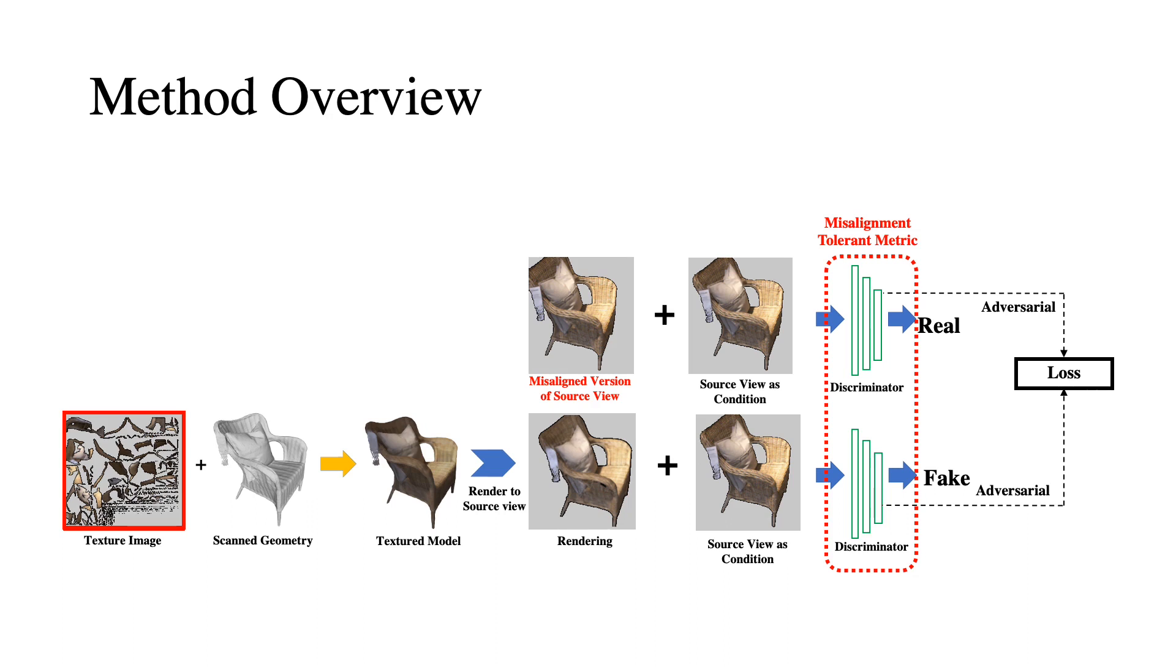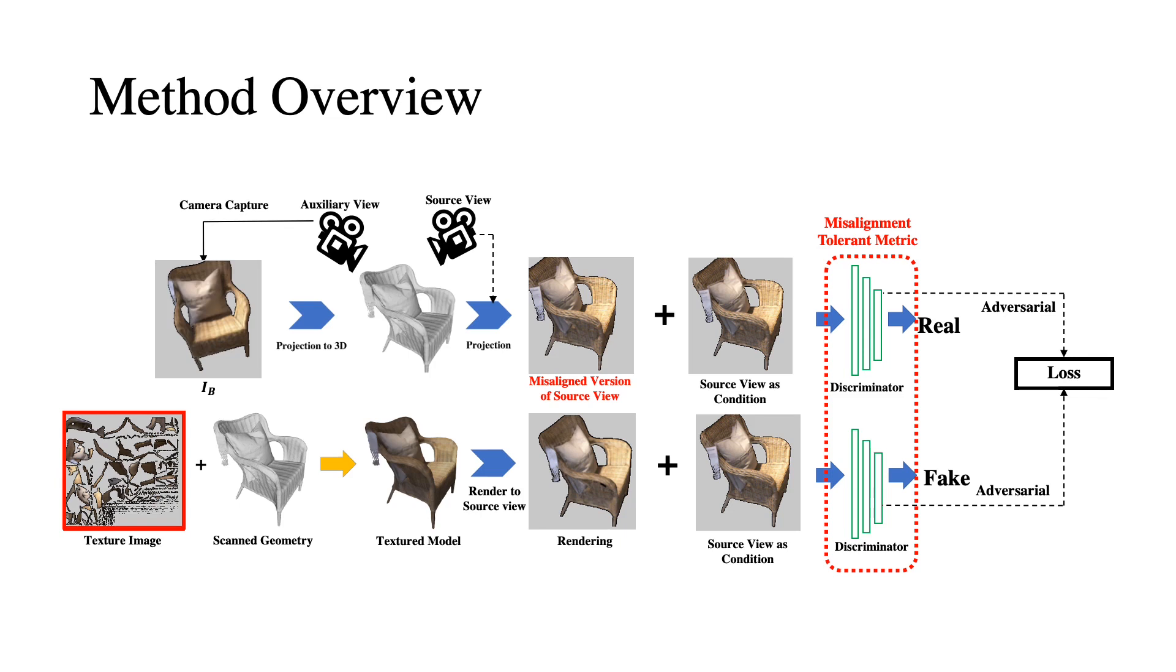Concretely, we generate additional real examples from another image in the dataset, which is used as an auxiliary view. We project the auxiliary image to the geometry and render it from the source view to create this misaligned version, which can best represent a misalignment that naturally exists between the geometry and the camera poses in the dataset. We optimize the texture image and the parameters of the discriminator in an alternating fashion, similar to the GAN setting.